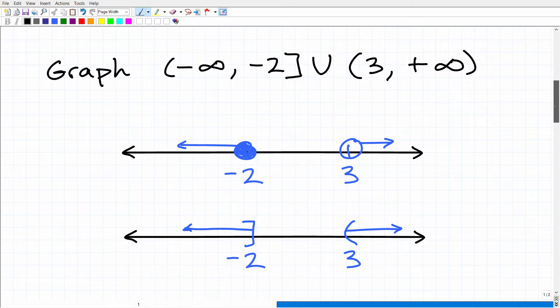All right. So there's basically two ways you can do this problem. It all depends on how you learn interval notation. But here is this interval right here. So what we're talking about is the interval negative 2. All numbers that are less than and equal to negative 2, and basically, that's going towards negative infinity.